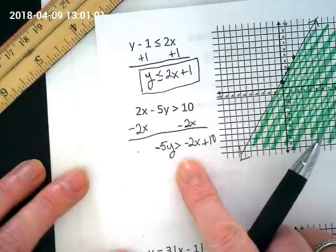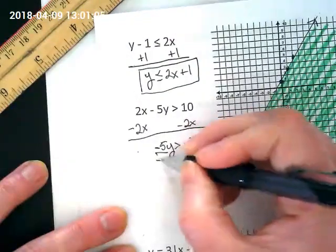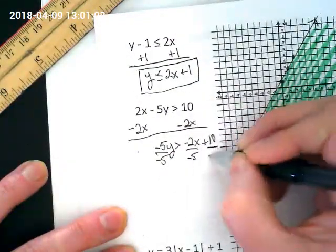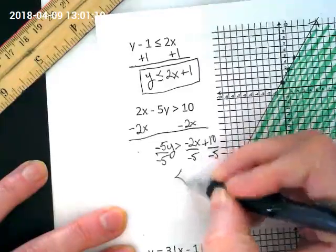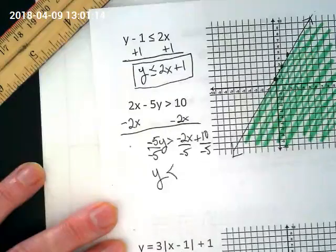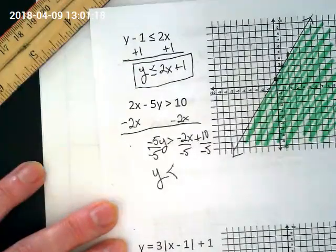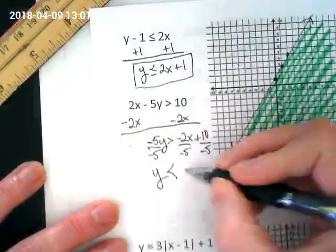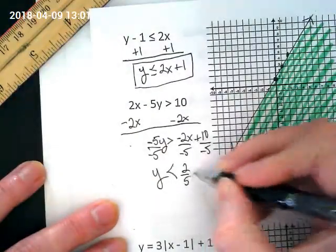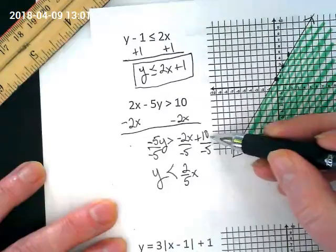We've talked about that before, but it's been a little while. So we're going to divide by negative 5, and that's going to flip our symbol. We have y by itself. What happens with our slope? It's going to be positive 2 over 5. And what happens with our y-intercept? Negative 2.